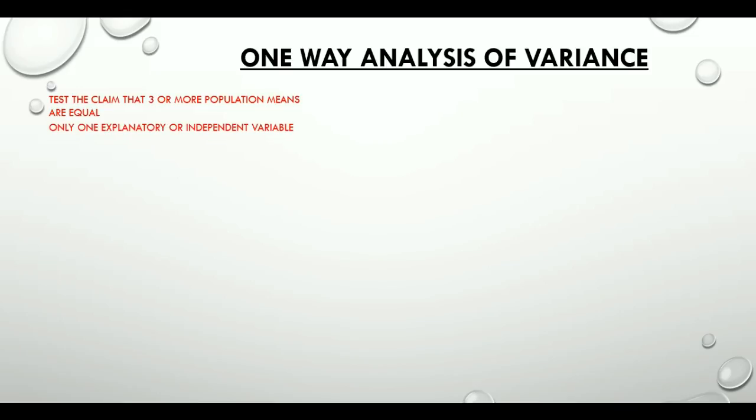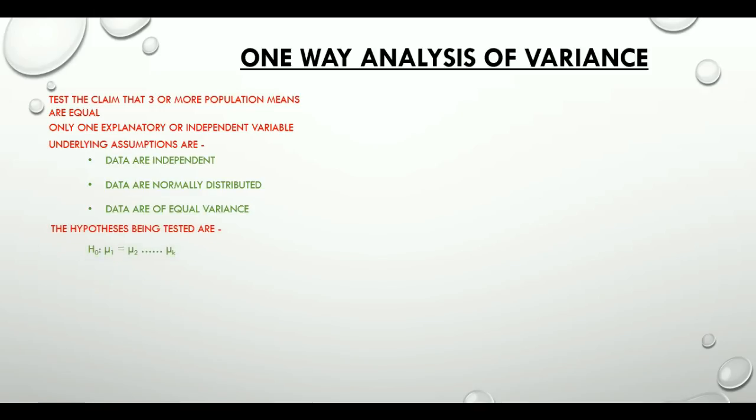The underlying assumptions are that the data are independent, normally distributed, and are of equal variance. The hypothesis being tested are null hypothesis H0 stated as mu1 equals mu2 and it goes up to mu k.